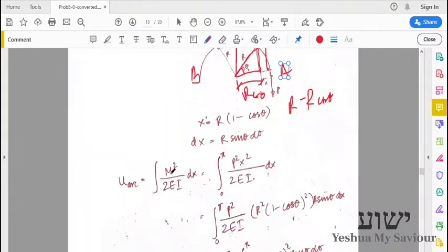If I directly substitute that equation here, we will get p squared r squared (1 minus cos theta) squared by 2EI dx.